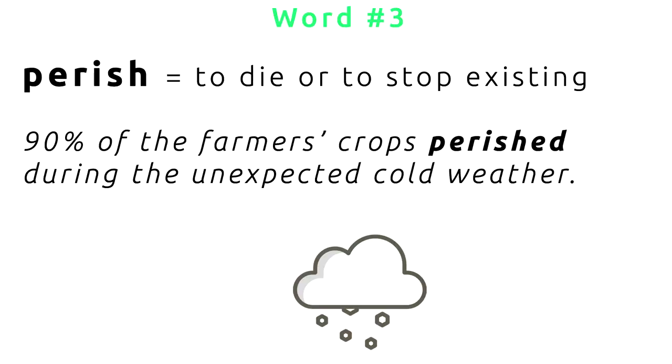Word number three is perish, which means to die or to stop existing. For example, 90% of the farmer's crops perished during the unexpected cold weather. These poor farmers had a very difficult time because 90% of the crops perished — 90% of the crops died. We use perish to say that a large number of things die in some kind of accident or catastrophic event.